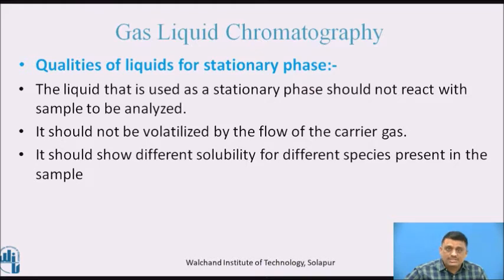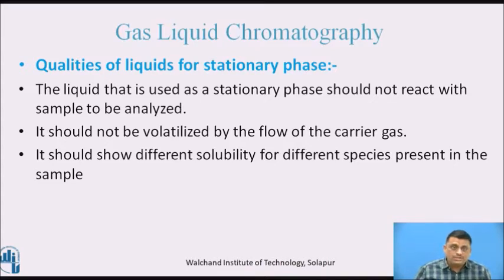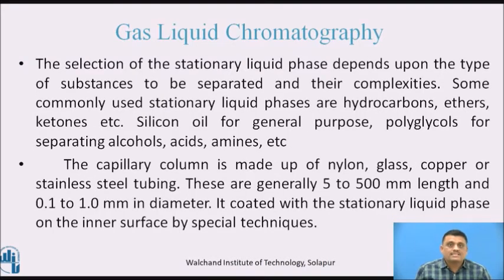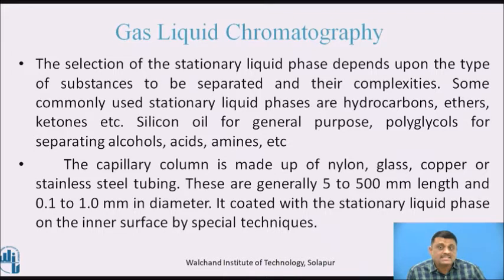Regarding the qualities of liquid for the stationary phase: the liquid used as a stationary phase should not react with the sample to be analysed — it should be inert. It should not be volatilised by the flow of the carrier gas, so the liquid should remain in liquid form and should not convert into vapours due to gas flow or heating. It should show different solubility for different species present in the sample. The selection of the stationary liquid phase depends upon the type of substances to be separated and their complexities. Commonly used stationary liquid phases include hydrocarbons, ethers, ketones, silicon oil for general purpose, and polyglycols for separating alcohols, acids, amines, etc.